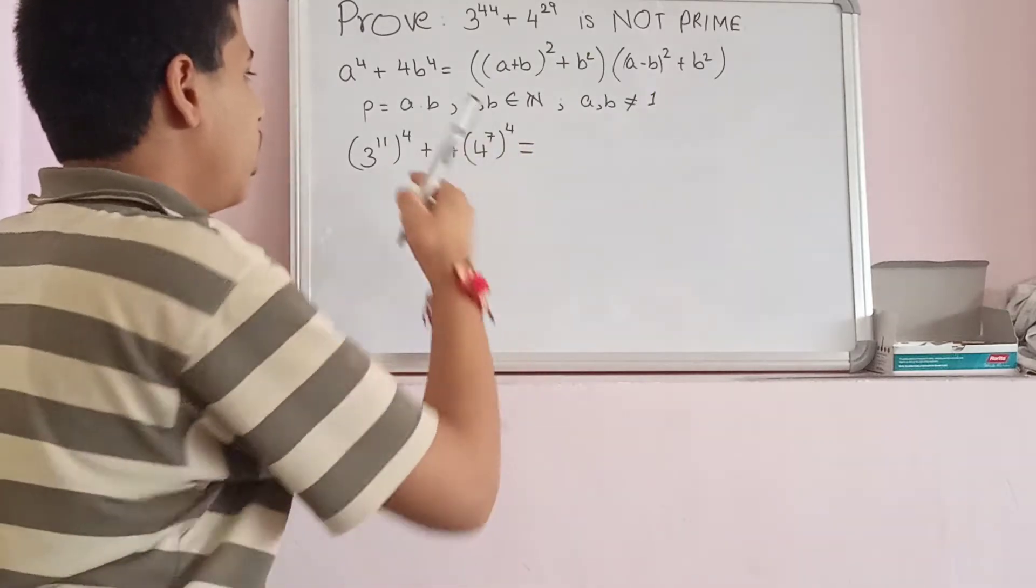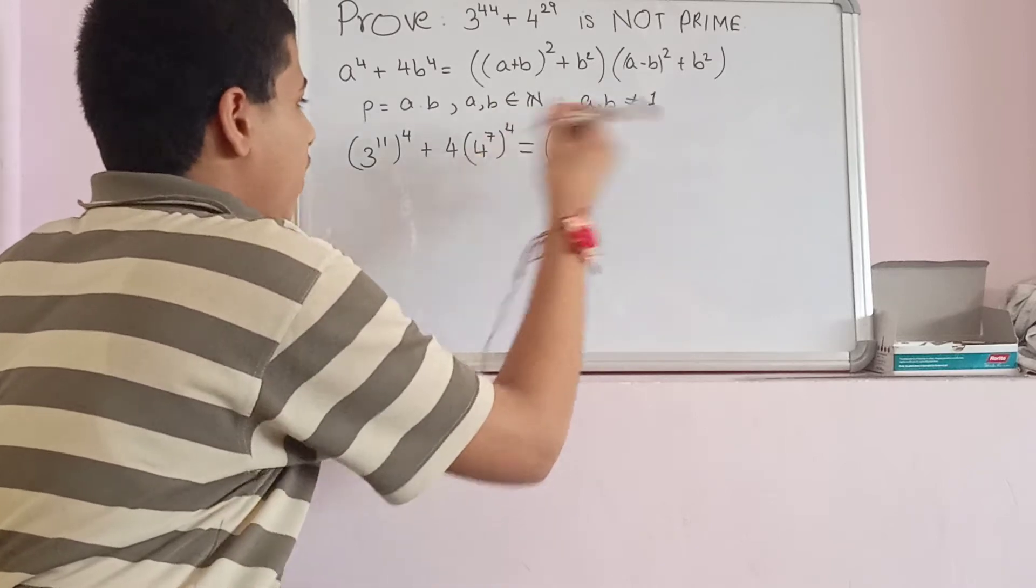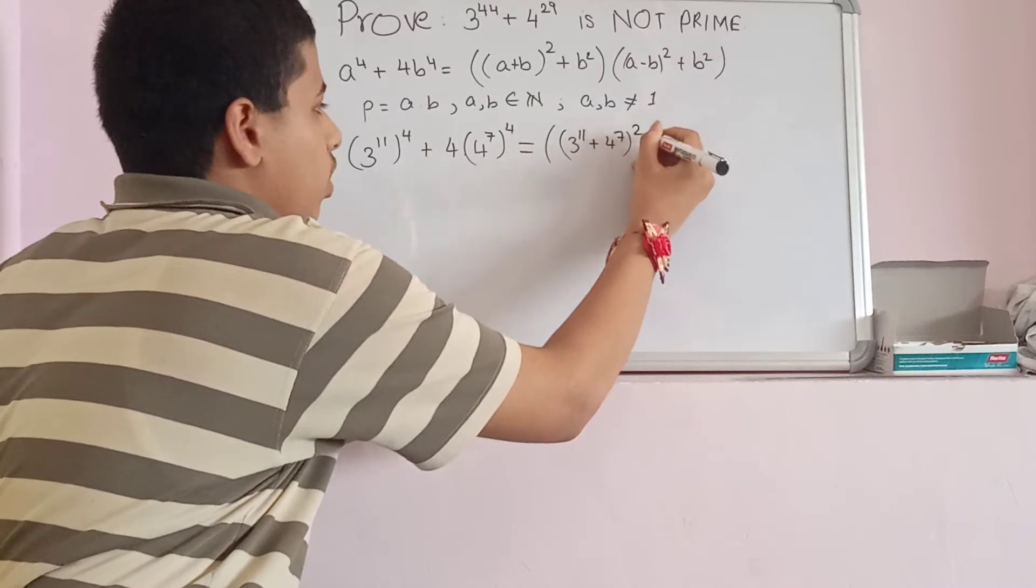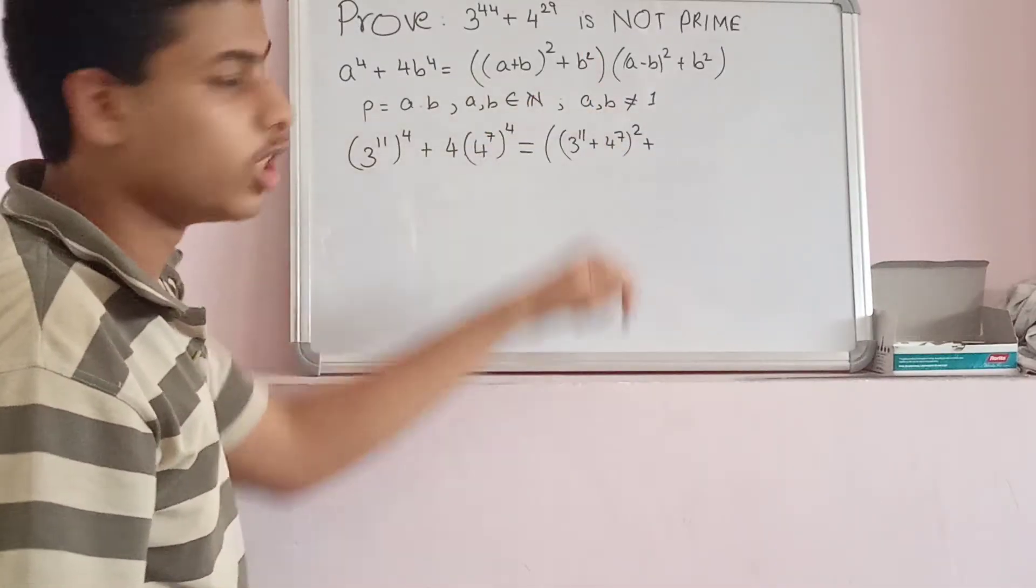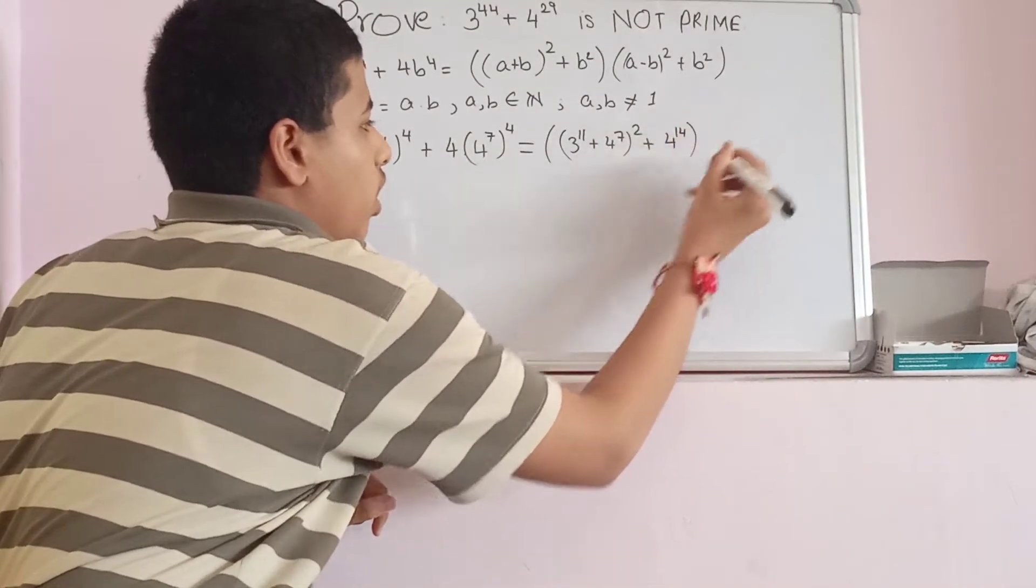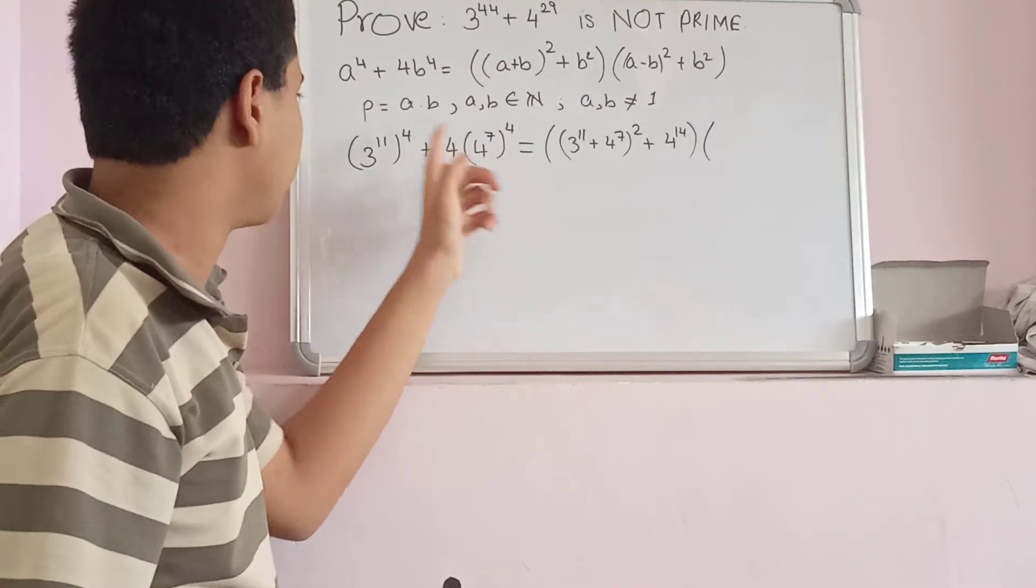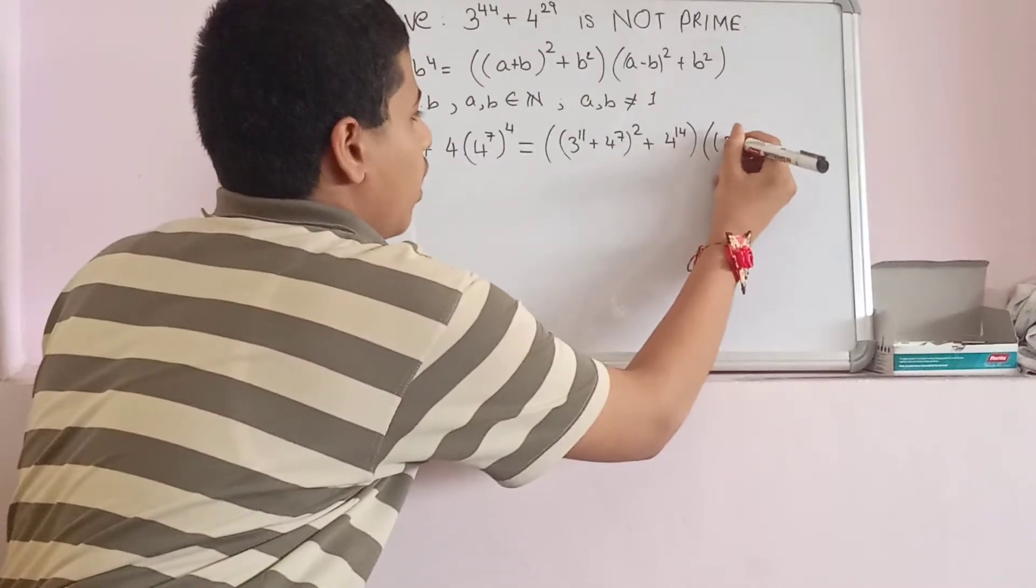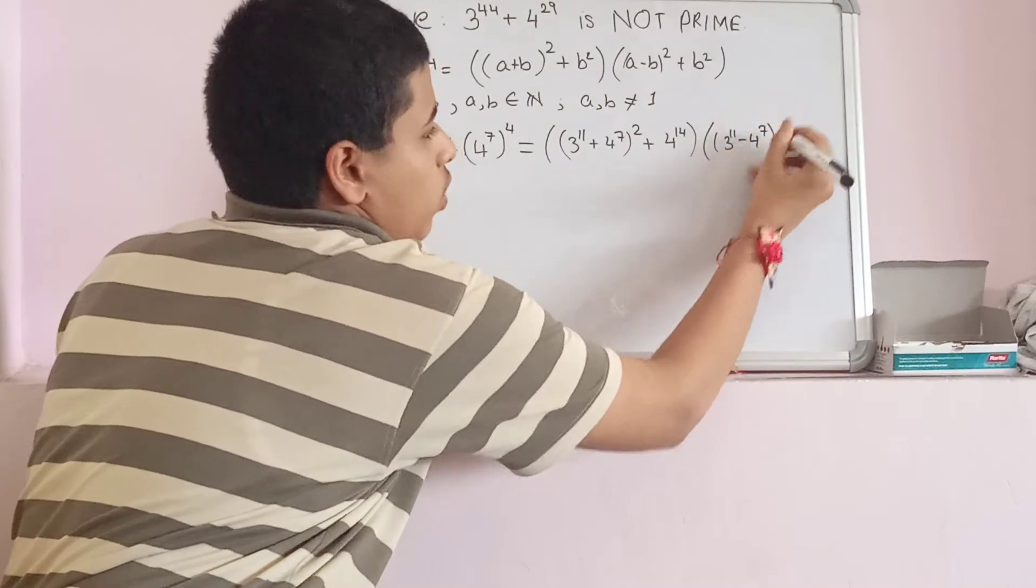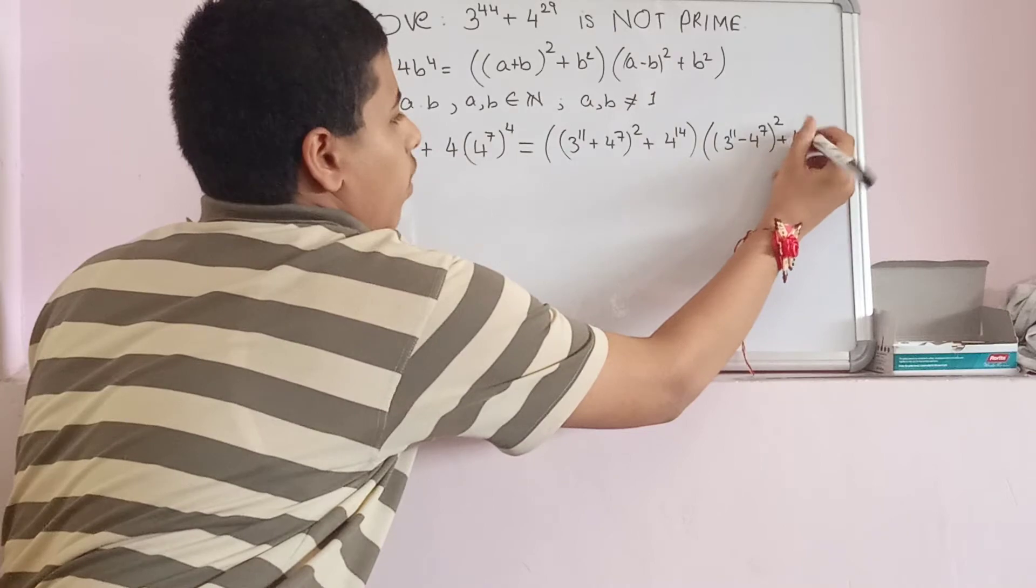Let's write it. This would be (3^11 + 4^7)^2 plus (4^7)^2, which is 4^14, multiplied by (3^11 - 4^7)^2 plus 4^14.